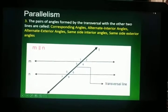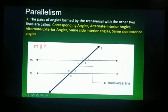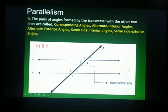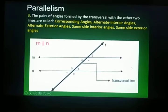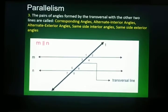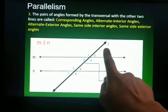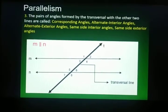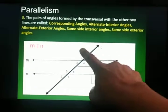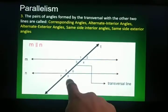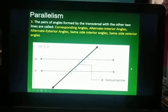And the last type: same side exterior angles. They are outside the parallel lines but on the same side of the transversal, and they are also supplementary. We have angles 1 and 7, and angles 2 and 8. Those cover the four angle pair types for parallel lines.